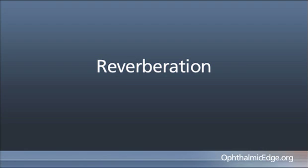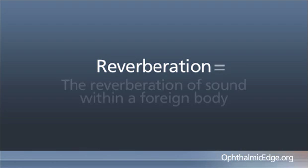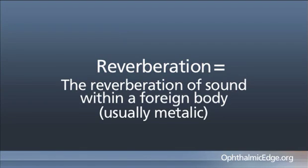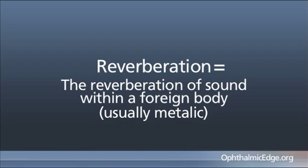I use ultrasound for collateral damage to the eye — retinal detachment, vitreous hemorrhage, the site of exit in the back wall of the globe — but not only for foreign body localization. Reverberation refers to the reverberation of sound within a foreign body, usually metallic, where the sound goes back and forth from one side of the foreign body to the other, releasing a little returning echo each time. This looks like a comet formation behind the foreign body, strung out to the right of the screen and into the orbital fat. We have one or two examples in the library.